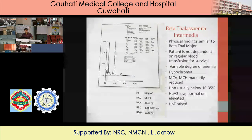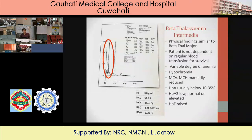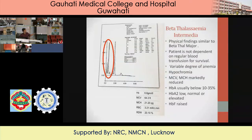Beta-thalassemia intermedia is a variety of beta-thalassemia major but with less acute clinical presentations. The hemoglobin is low, all CBC indices are low, RDW is high. When you look at the chromatogram, you find a high HbF — around 25% — along with slightly higher HbA2. So the main diagnostic part is high HbF combined with slightly higher HbA2 and anemia, going in favor of thalassemia intermedia.